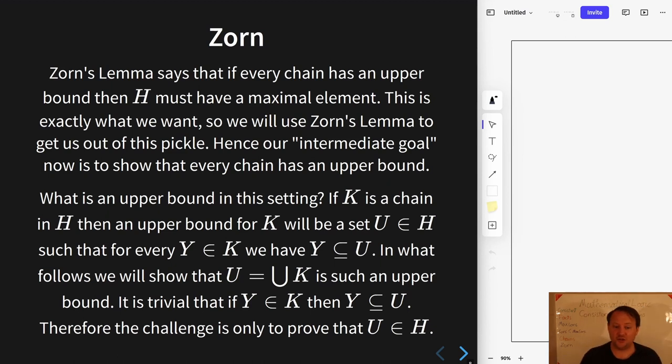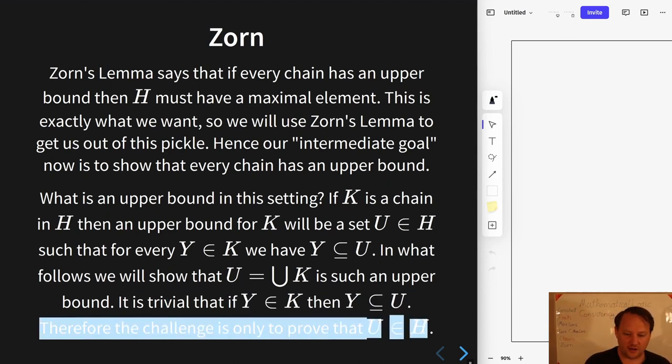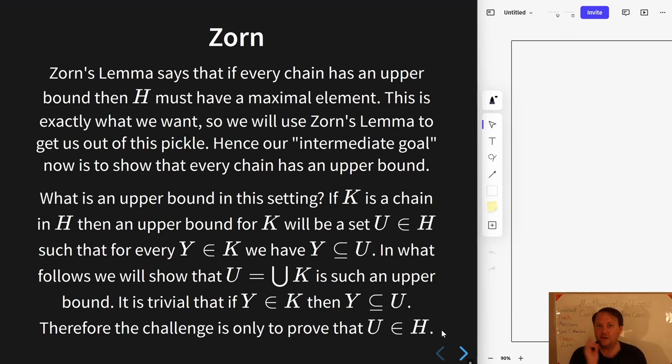Part of this is completely trivial. The part where we say if Y is something in the chain, then Y is a subset of U follows trivially from definitions. It's barely a sentence proof.